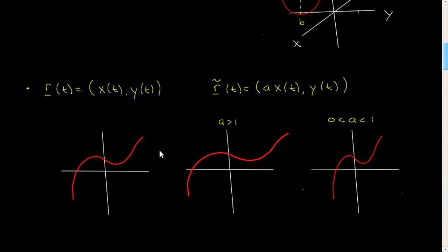Let's see what we can understand here. Where X is 0 in the original curve, X will be 0 in all of these curves — so 0 is the same. And where X is 1 in this parameterization — let's pick this minimum here — X is 1 there. In the new parameterization, X will be equal to A, so that will correspond to A. If A were negative, of course, this curve would flip about the y-axis.